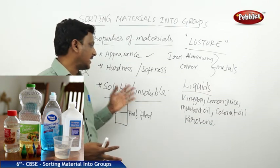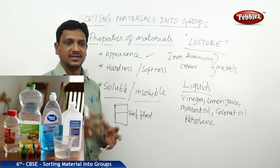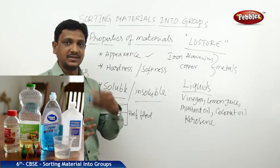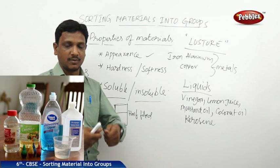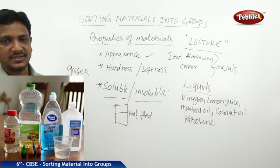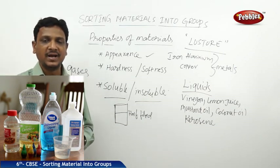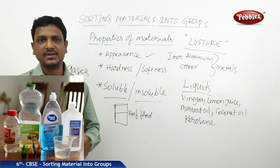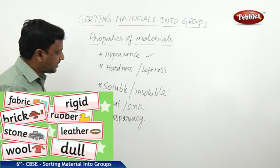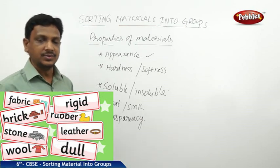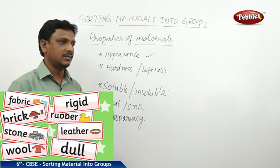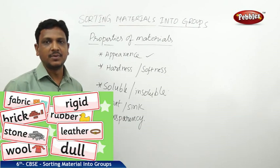Solubility is another property we can check — whether an object is hard or soft, how the appearance is, whether it has lustre, and whether it has the properties of malleability or ductility. All these are properties of materials which we can explore by physical observation and by experimentation. Now we are going to discuss two more properties: floating or sinking, and transparency.